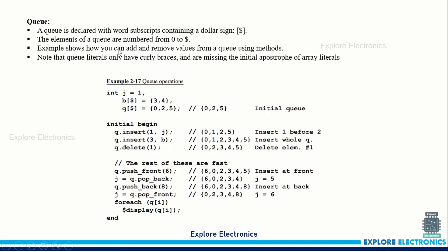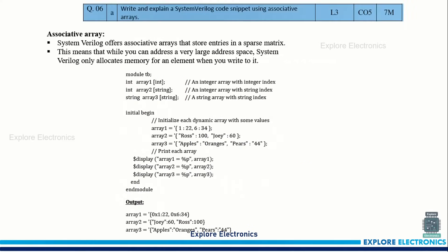Queues use different methods like push and pop — push_front and push_back — which need to be explained. These examples are required to get full marks. Then: write and explain a SystemVerilog code snippet using associative arrays. A brief introduction to associative arrays is given, and then a code snippet is shown with three arrays: one with an integer index, one with a string index, and one of string type. Initialization and display behavior are demonstrated.